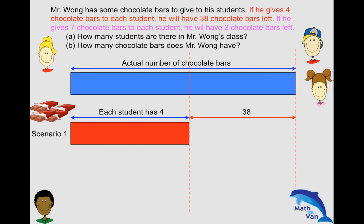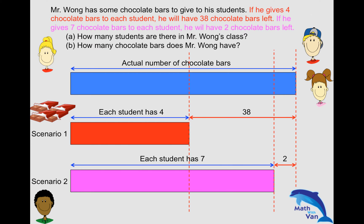And then in scenario two, if he gives seven chocolate bars to each student, he will have two chocolate bars left. So again, another excess because he did not use up all the actual number of chocolate bars — he would have two left. So the pink portion is the number of chocolate bars that he used for scenario two.